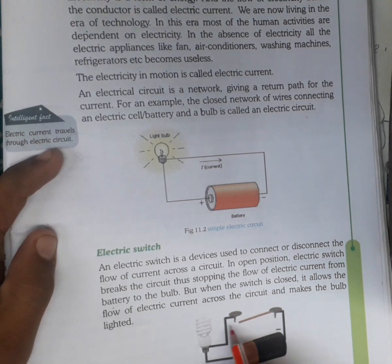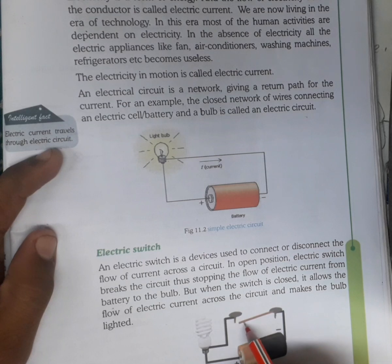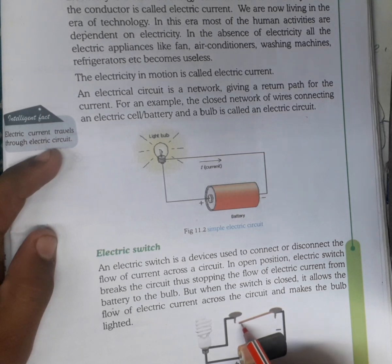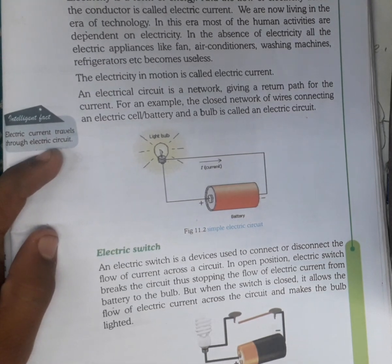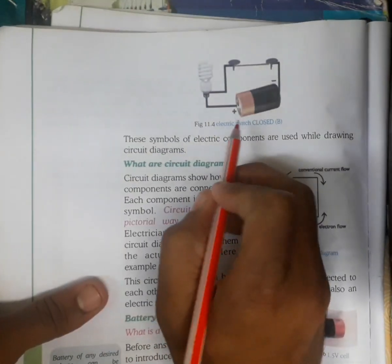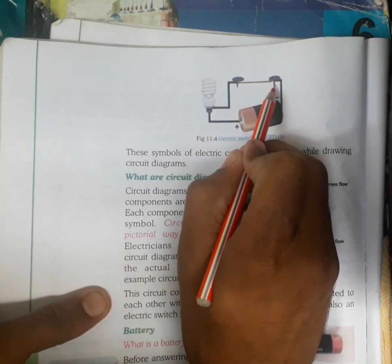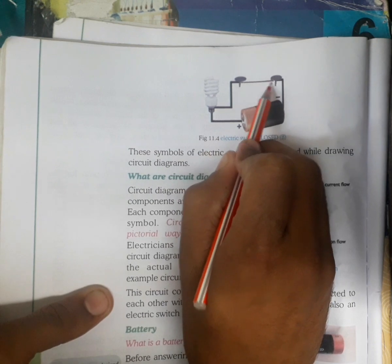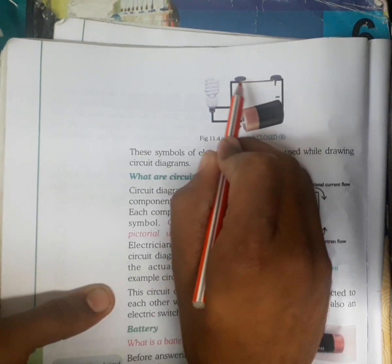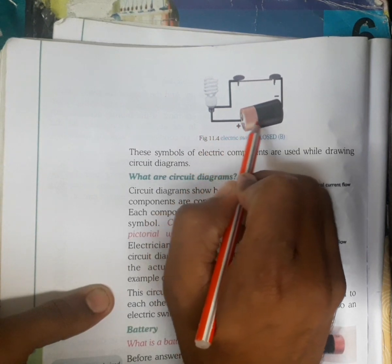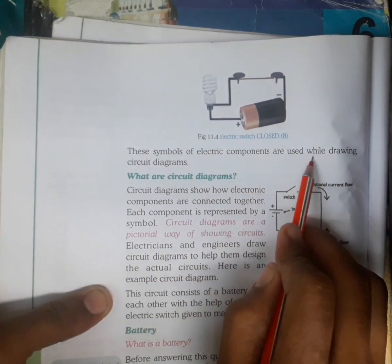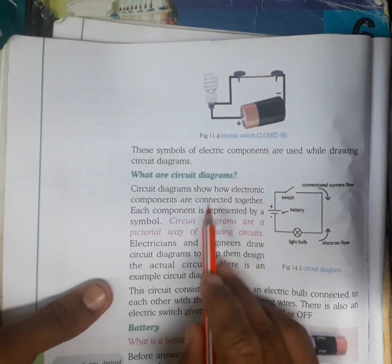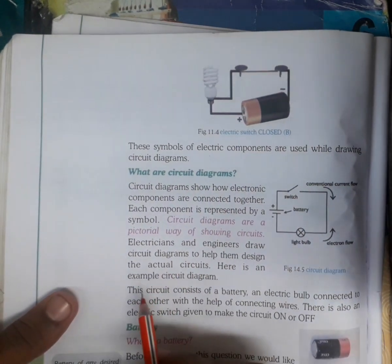You can see this is an open circuit. It means electric current will not flow, so our LED, CFL, or bulb will not glow. This is the figure of the closed circuit — both points are connected with wire. When connected, current flows through and our light will glow. These symbols of electric components are used while drawing a circuit.